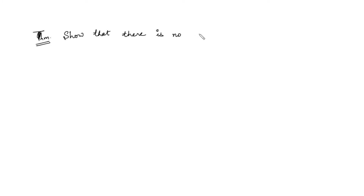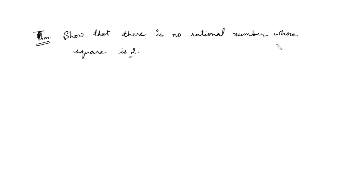There is no rational number whose square is 2. There is no rational number whose square is 3, whose square is 5, and so on. You have to prove that there exists no rational number whose square is 2.